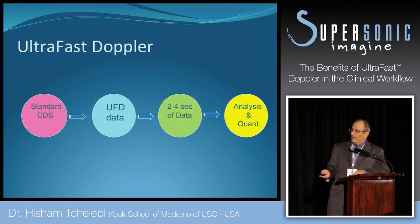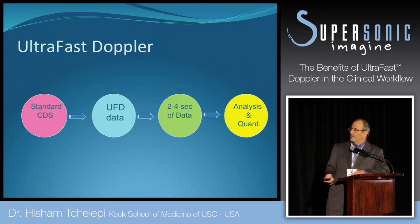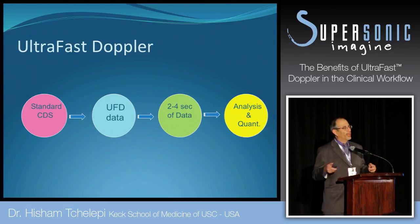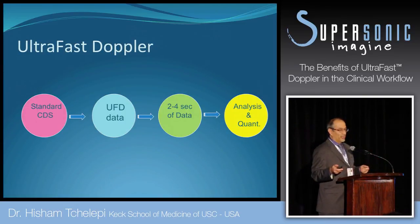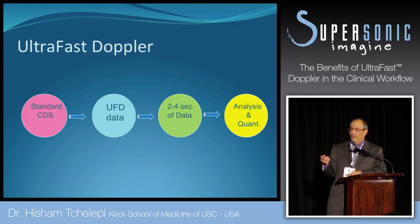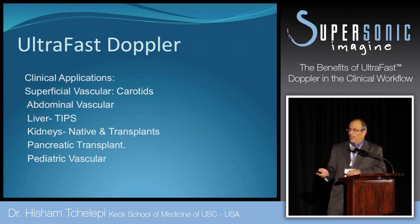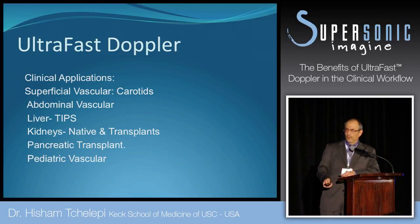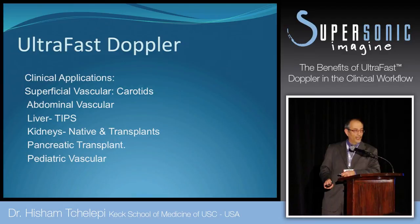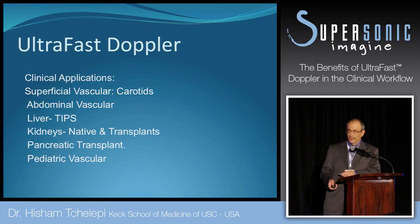Ultra-fast Doppler versus standard color Doppler — you get a lot more data, and you can analyze, quantify, and get qualitative outcomes at the same time, applicable to anything you do in abdominal vascular imaging. Carotid is really very handy — you can move patients in and out of your lab and retrospectively go back and fix whatever you want about the study.